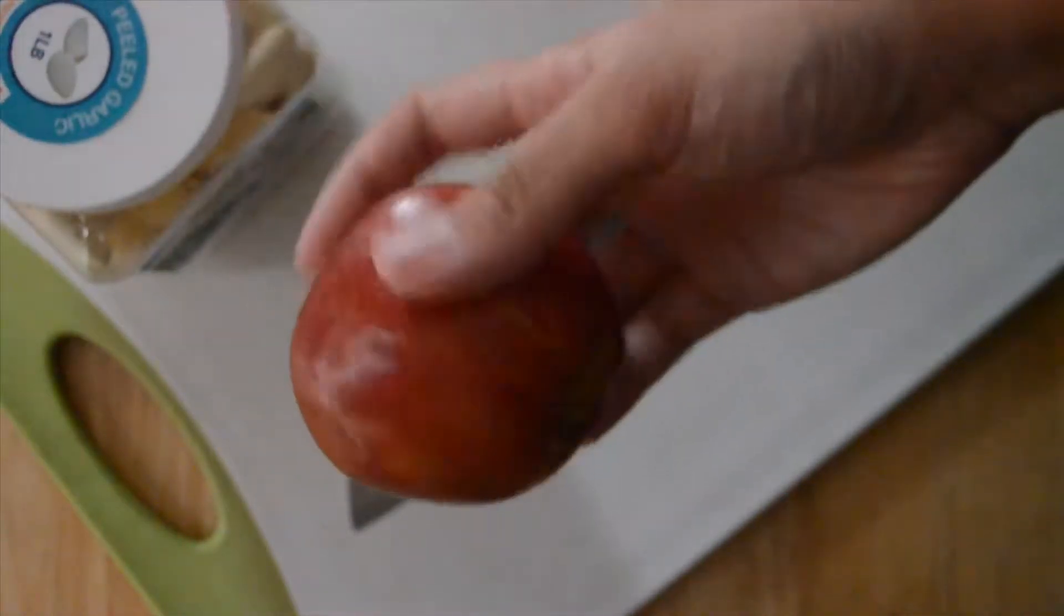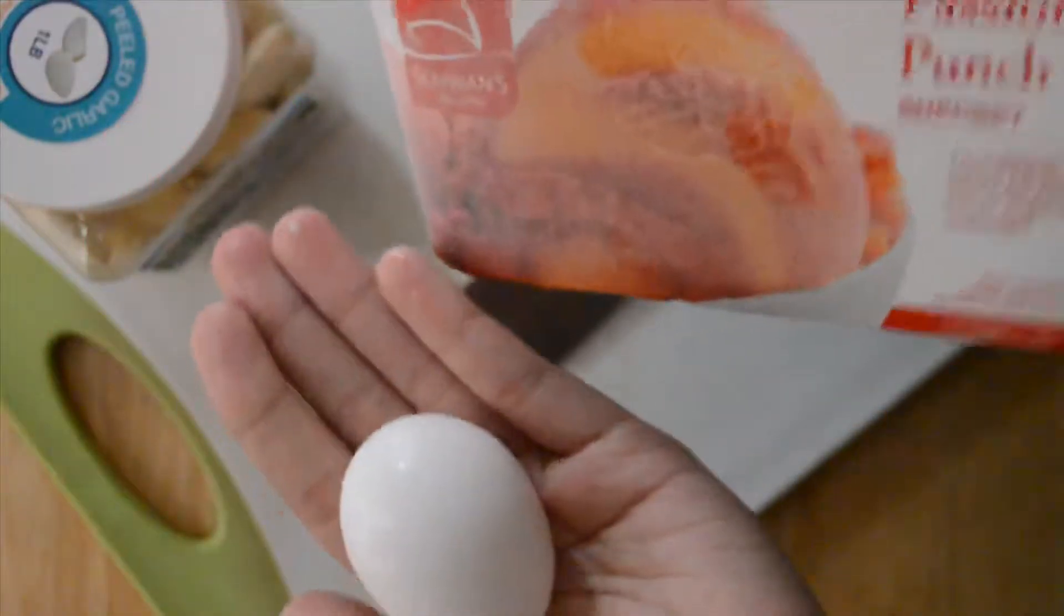Today we're starting off with just a regular chef's knife, garlic for mincing, we have an apple to show you a coring technique, and then I have two hacks for you.